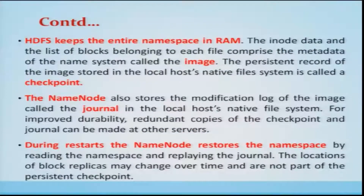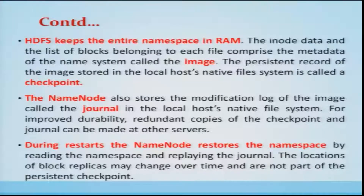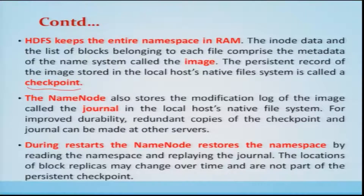HDFS keeps the entire namespace in RAM. The inode data and the list of blocks belonging to each file comprise the metadata of the name system, called the image. The persistent record of the image stored in the local host's native file system is called the checkpoint. The NameNode also stores modifications to the image log, called journals, in the local host's native file system. During restarts, the NameNode restores the namespace by reading the namespace and replaying the journal.